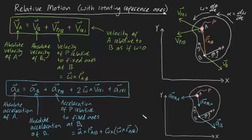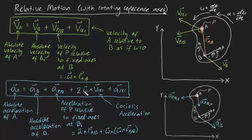Now let's talk about the famous Coriolis acceleration: 2 omega cross v_rel. The intuition behind this formula is a little tricky and honestly deserves a whole video on its own. By application of the right-hand rule, the Coriolis acceleration vector must be orthogonal to both omega and v_rel. Since v_rel is pointing in this direction, the Coriolis acceleration must point 90 degrees from that — just here. This is our Coriolis acceleration: 2 omega cross v_rel.